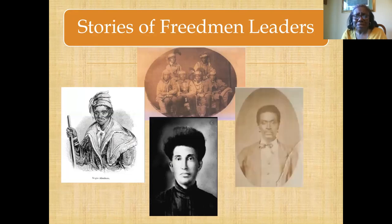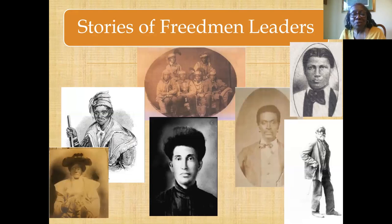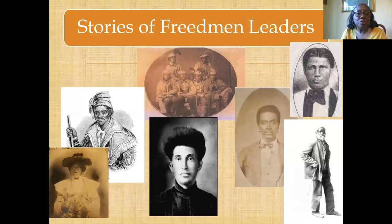There are so many stories of Freedmen leaders — Caesar Bruner himself; those who came from Florida like Negro Abraham; Betty Ligon, head litigant in Equity Case 7071; and so many more. You've got Charles Cohey, Caesar Bruner's brother Carol Bruner, who was Creek — full brothers, one Seminole, one Creek. You have Hagar Myers, a woman who herself made a contribution to bring about the end of the Green Peach War. Incredible stories for us to tell and to find.